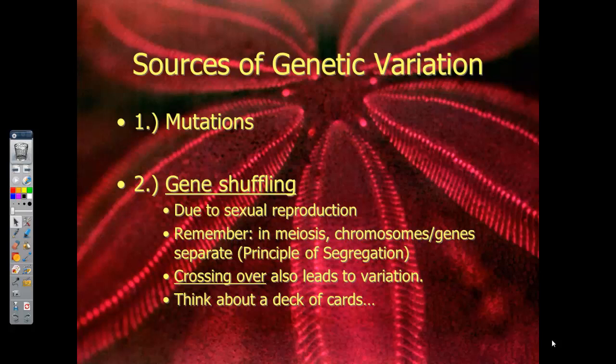Gene shuffling is another cause of genetic variation. We talked about in meiosis that gametes are formed and sperm and egg meet. The principle of segregation — Mendel's Law — segregation and independent assortment say that those genes are free to shuffle with other genes, and they're not tied to the law of dominance.